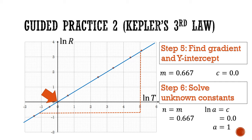Substituting back into our original equation, r equals t to the power of two-thirds. Rearranging, r cubed equals t squared — and that is Kepler's third law: the cube of the orbital radius is proportional to the square of the orbital period.